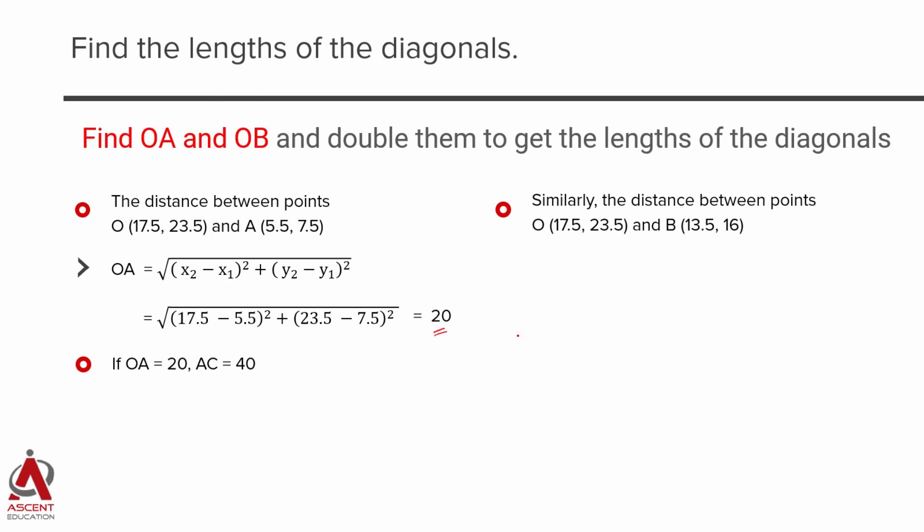Similarly, let us compute the value of OB. Coordinates of O are 17.5 and 23.5. Similarly, the coordinates of B are 13.5, 16. So the length of OB is going to be equal to 8.5. Again using the same formula which is x2 minus x1 the whole square plus y2 minus y1 the whole square, all this under the root. Because we know OB, we can compute the value of BD. BD is equal to 17.